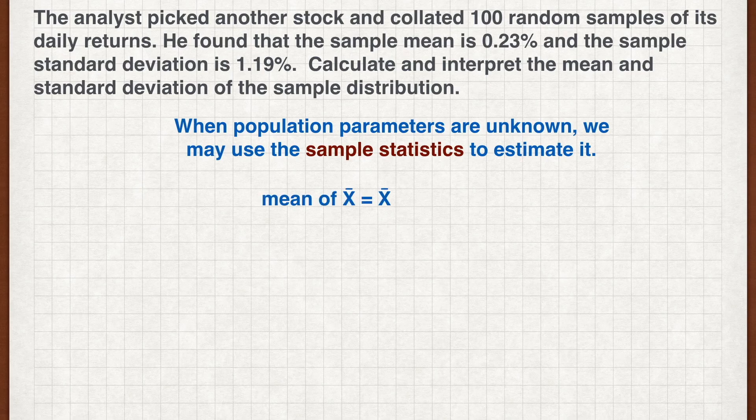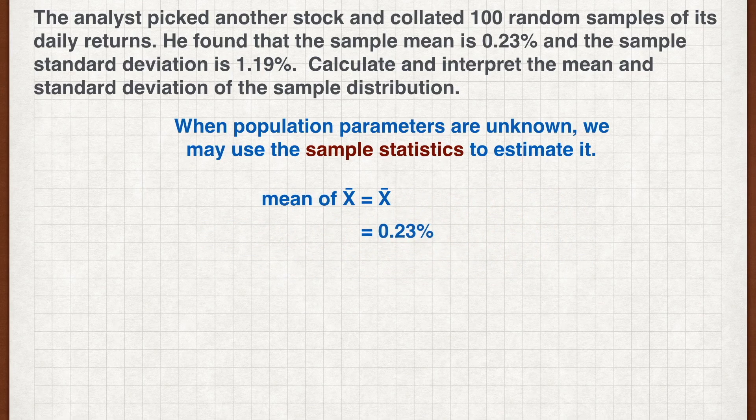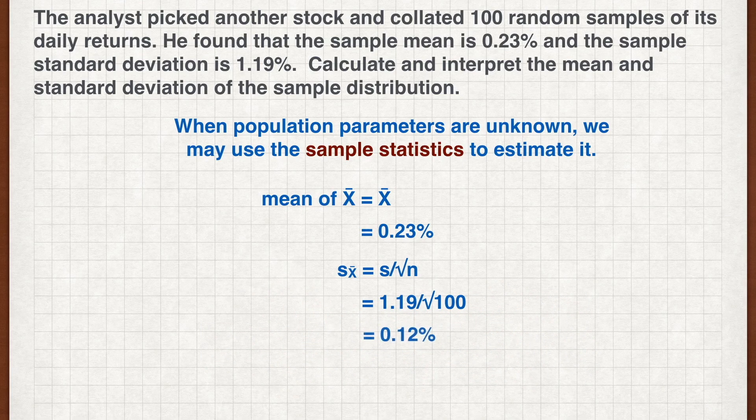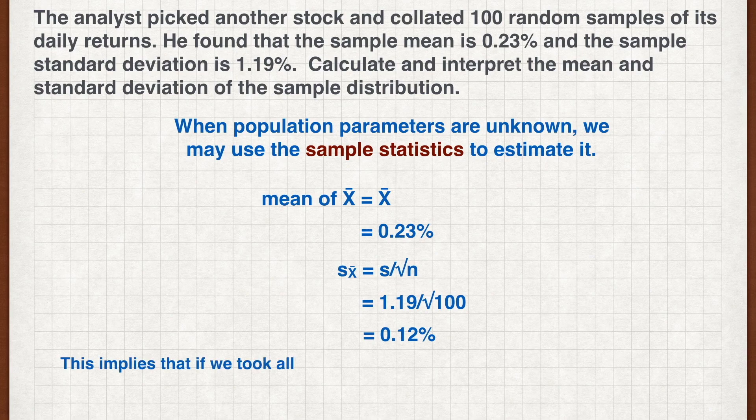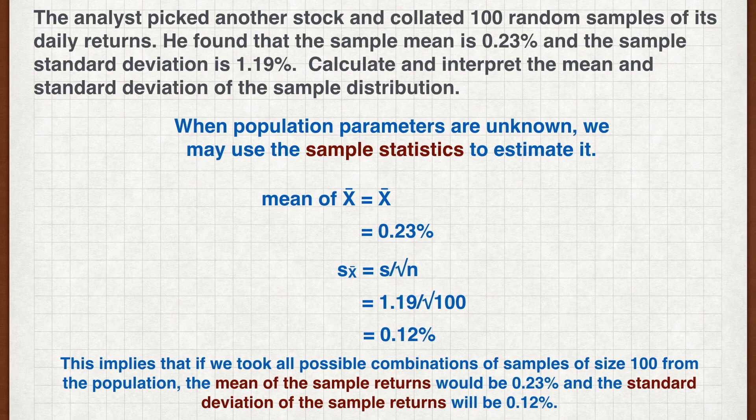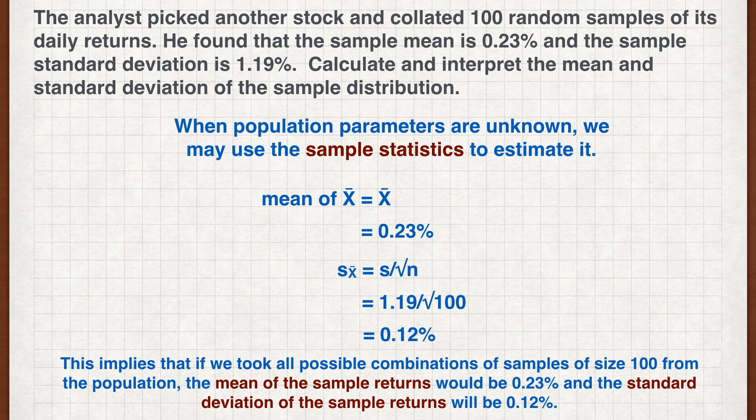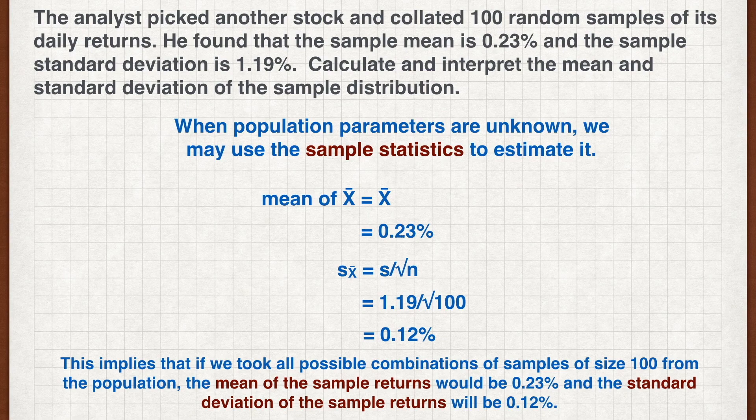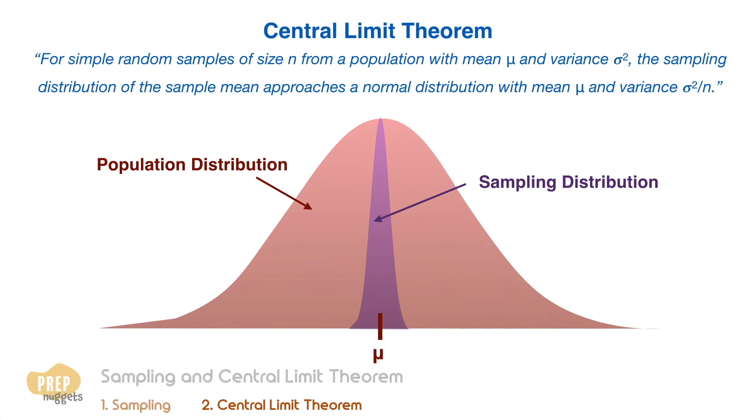Therefore, in this case, the mean of the sample distribution is 0.23% and the standard deviation is 0.12%. This implies that if we took all possible combinations of samples of size 100 from the population, the mean of the sample returns would be 0.23% and the standard deviation of the sample returns will be 0.12%. To summarize the central limit theorem,